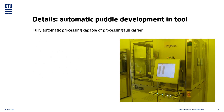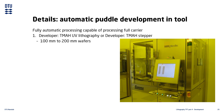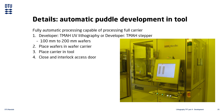Our two automatic developer tools also only process a single wafer at a time, but can process an entire wafer carrier automatically. Both tools use TMAH as developer and can only process whole wafers from 100 to 200 mm in diameter. You place your wafers in a wafer carrier, put the carrier into the machine, select the process you want to run, and press start. When the process completes, you remove the wafer carrier from the tool.